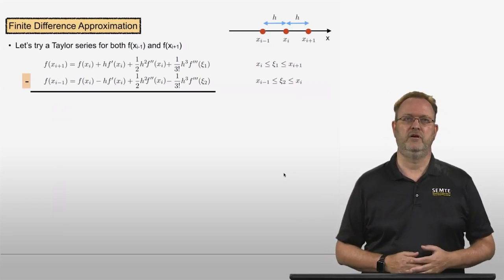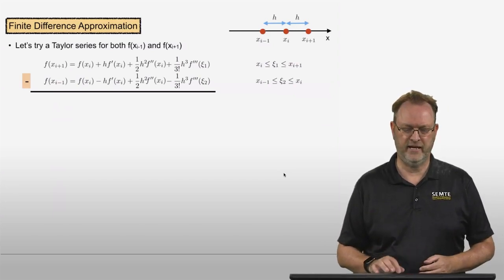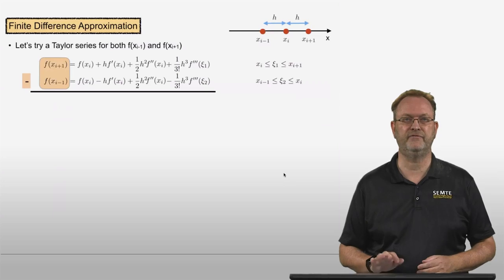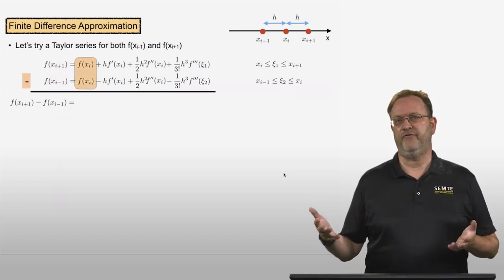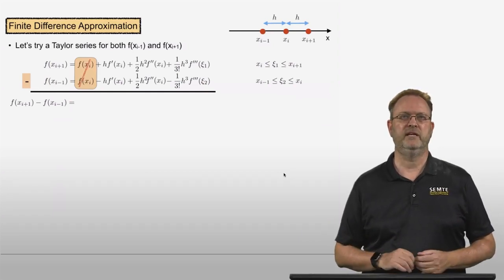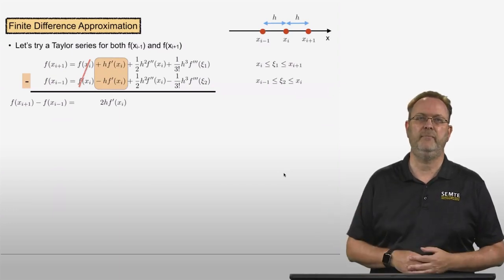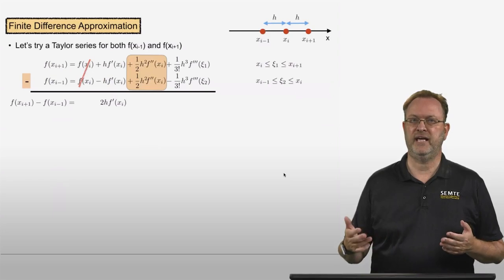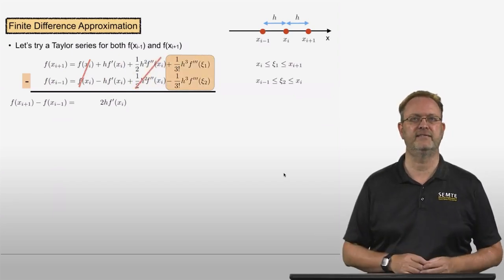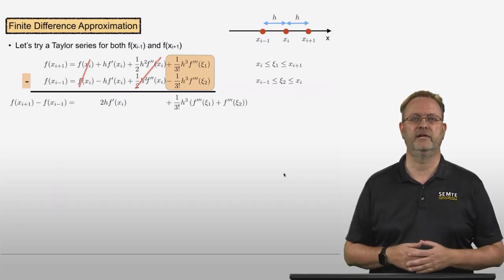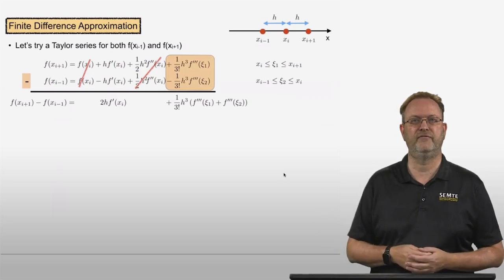So let me take the difference of these two Taylor series — subtracting the Taylor series for f of xi minus 1 from the Taylor series for f of xi plus 1. On the left-hand side we have f of xi plus 1 minus f of xi minus 1. The f of xi terms drop out, and the next term is h times f prime at xi minus negative h times f prime at xi, giving 2h f prime at xi. The h squared terms cancel, and the only remaining term is 1 over 3 factorial times h cubed times the sum of the third derivatives evaluated at psi 1 and psi 2.